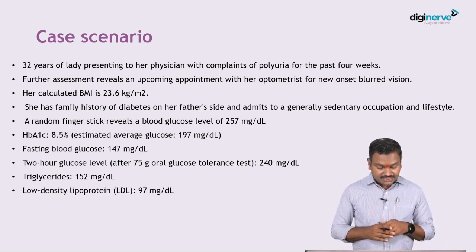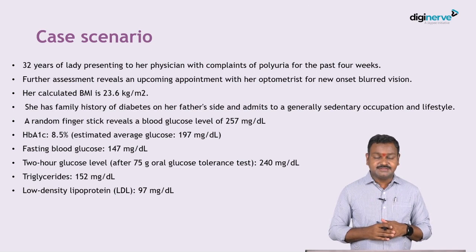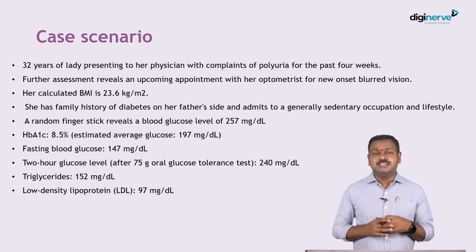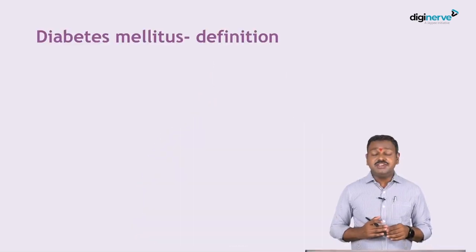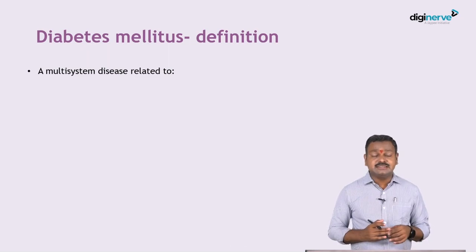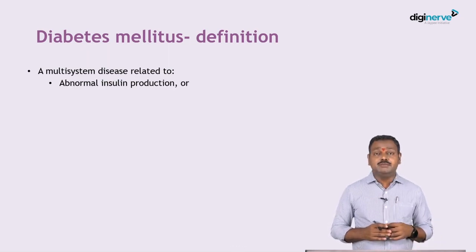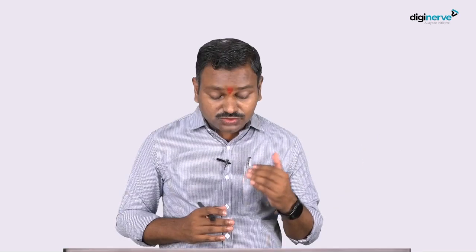The triglycerides are 152 and the LDL is 97. The question is how will you manage this case. This is a young patient presenting with diabetes; we have to assess what type of diabetes it is, whether there are any complications, and then plan the management. The definition of diabetes mellitus is a multi-system disease related to abnormal insulin production, impaired utilization of insulin, or both.